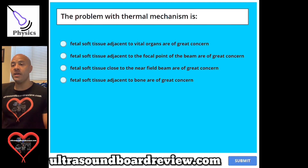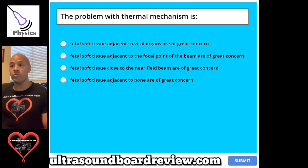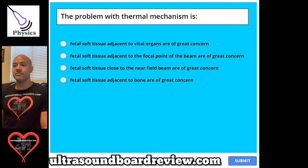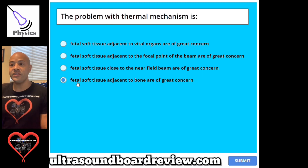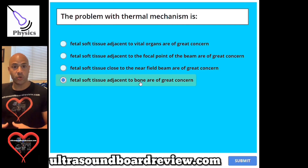Question 97. The problem with thermal mechanism is: A, fetal soft tissue adjacent to vital organs are of great concern. B, fetal soft tissue adjacent to the focal point of the beam are of great concern. C, fetal soft tissue close to the near field beam are of great concern. Or D, fetal soft tissue adjacent to bone are of great concern. The answer is D, fetal soft tissue adjacent to bone are of great concern. This is because bone is an absorber — if bone is absorbing the energy of the ultrasound, it could heat up the surrounding tissue around it.